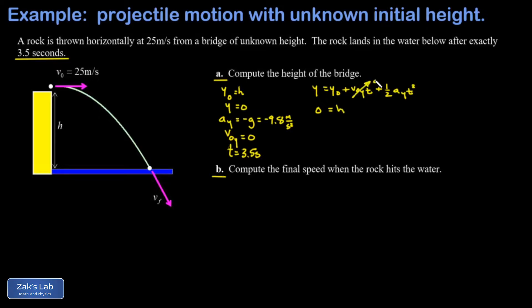I plug everything in. Remember the initial Y velocity is zero. AY is negative 9.8. I just move the minus sign out in front. And our fall time is three and a half seconds.